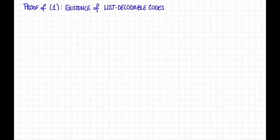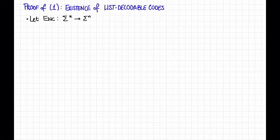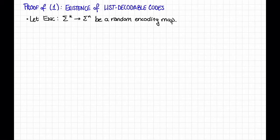Let's prove the list decoding capacity theorem. We'll start with bullet point 1, which says that there exist good list decodable codes. We're going to do this proof by the probabilistic method — we'll just pick a completely random code and show that with high probability it does the job. So let enc, which maps Σ^k to Σ^n, be a completely random encoding map. We would like to show that as long as the rate is a little bit less than 1 minus the q-ary entropy of p, the code C — the image of this random encoding map — is (p, L) list decodable for L not too large.